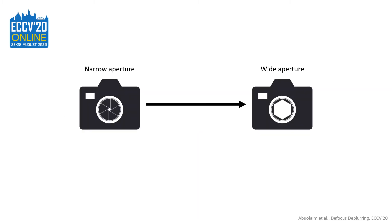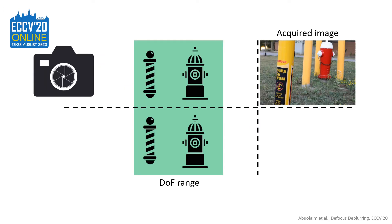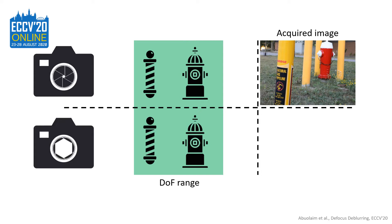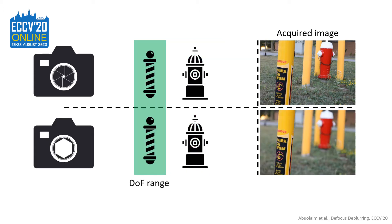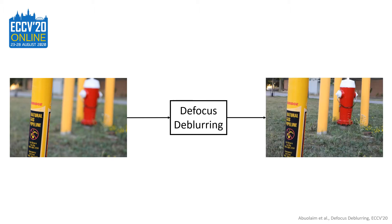Sometimes, imaging with a wider aperture is required. For example, wider aperture increases the image exposure to light in low light conditions. Another use case for a wider aperture is to capture scenes that require faster shutter speed. Wider aperture is also useful for capturing less noisy images. However, capturing an image with a wider aperture will affect camera depth of field in which it gets shallower, as shown here in this example. Shallow depth of field results in an image that has a spatially varying defocus blur, and this blur is usually undesired. Therefore, our goal in this work is to reduce the effect of undesired defocus blur.